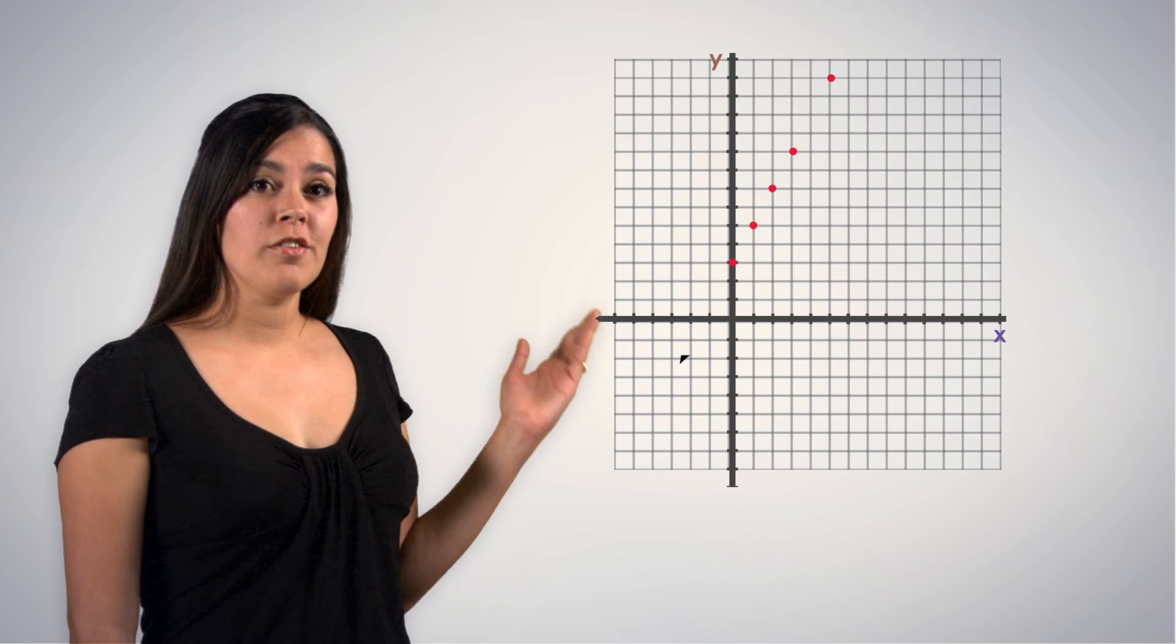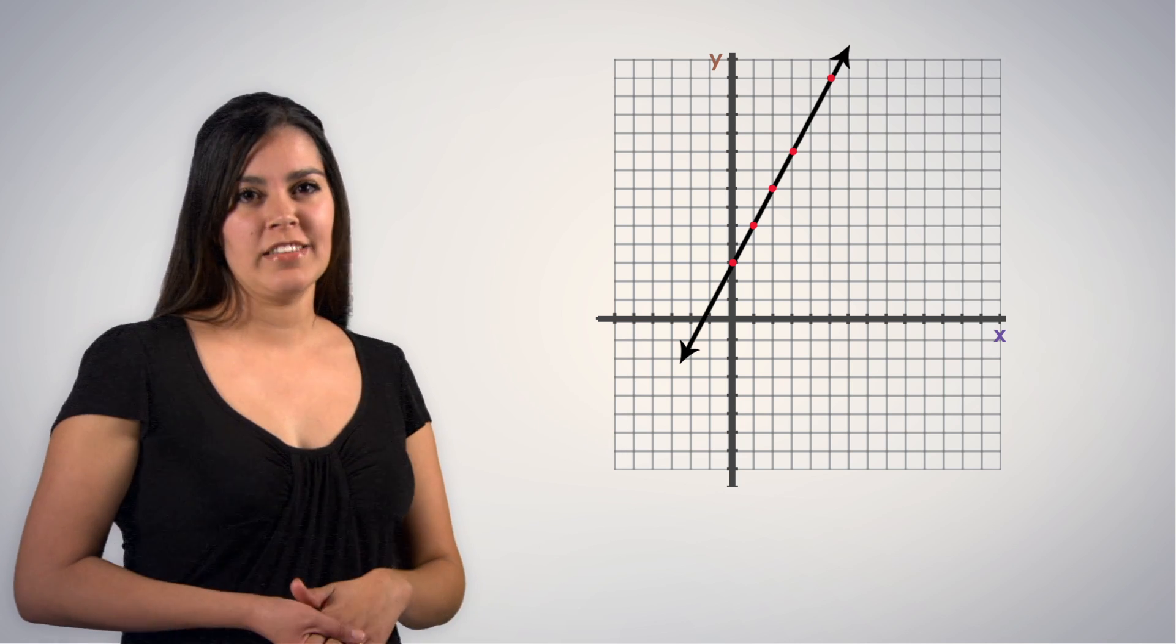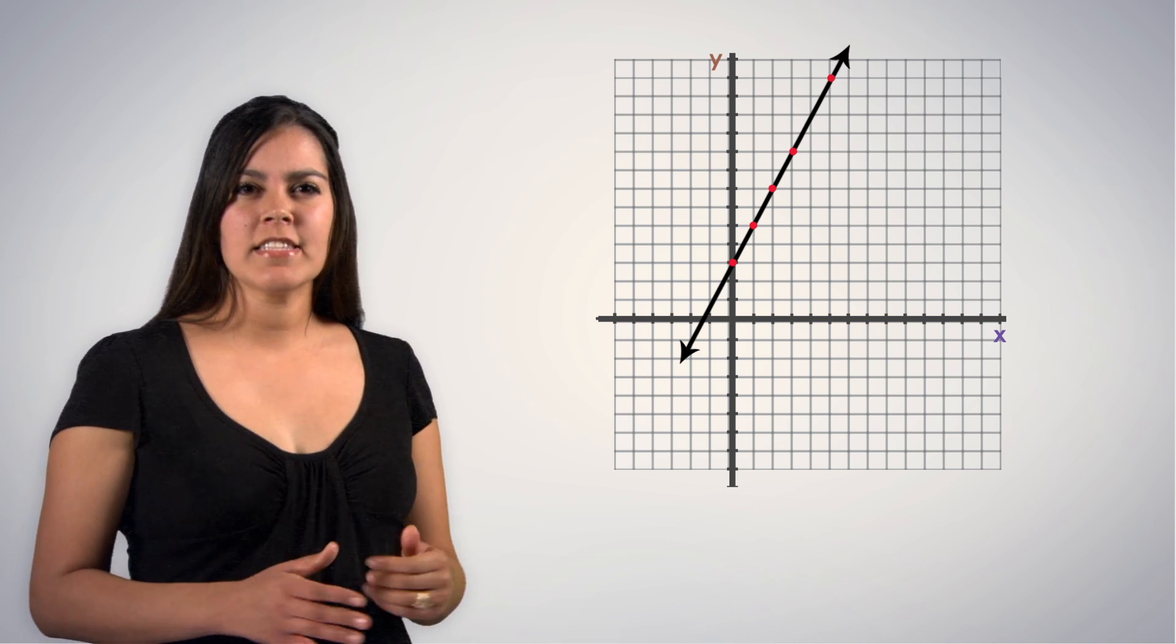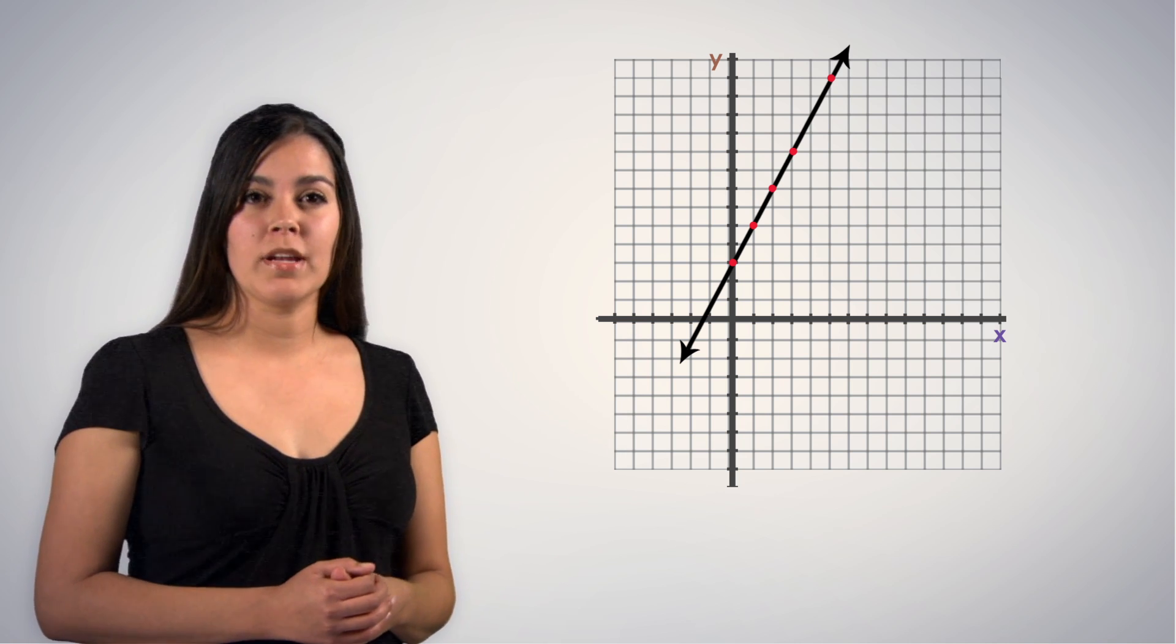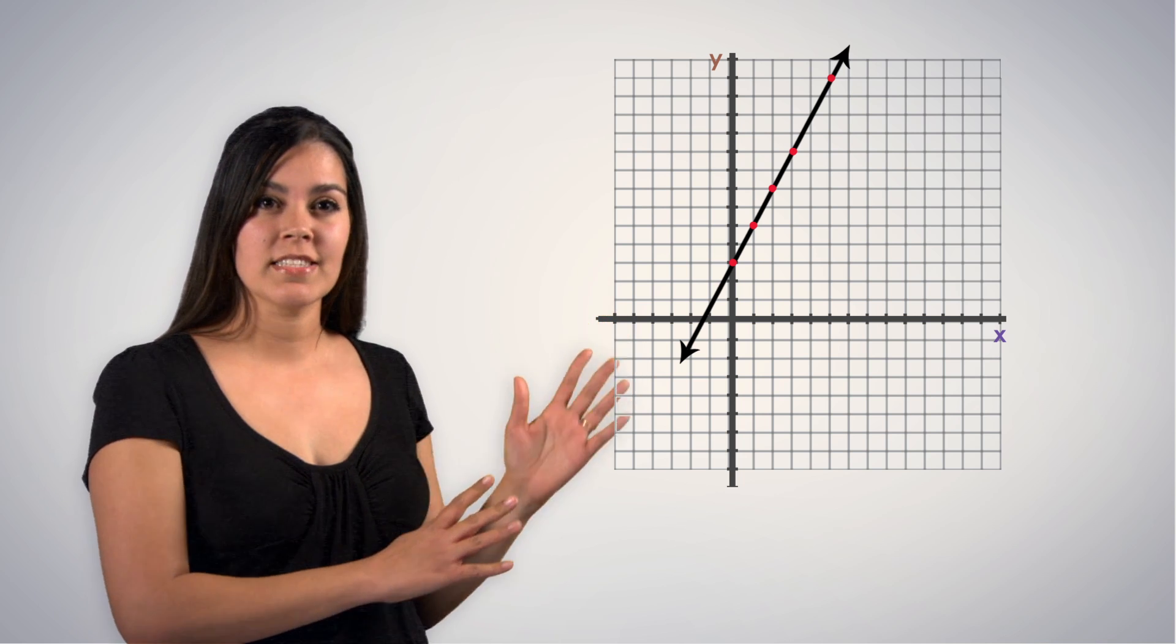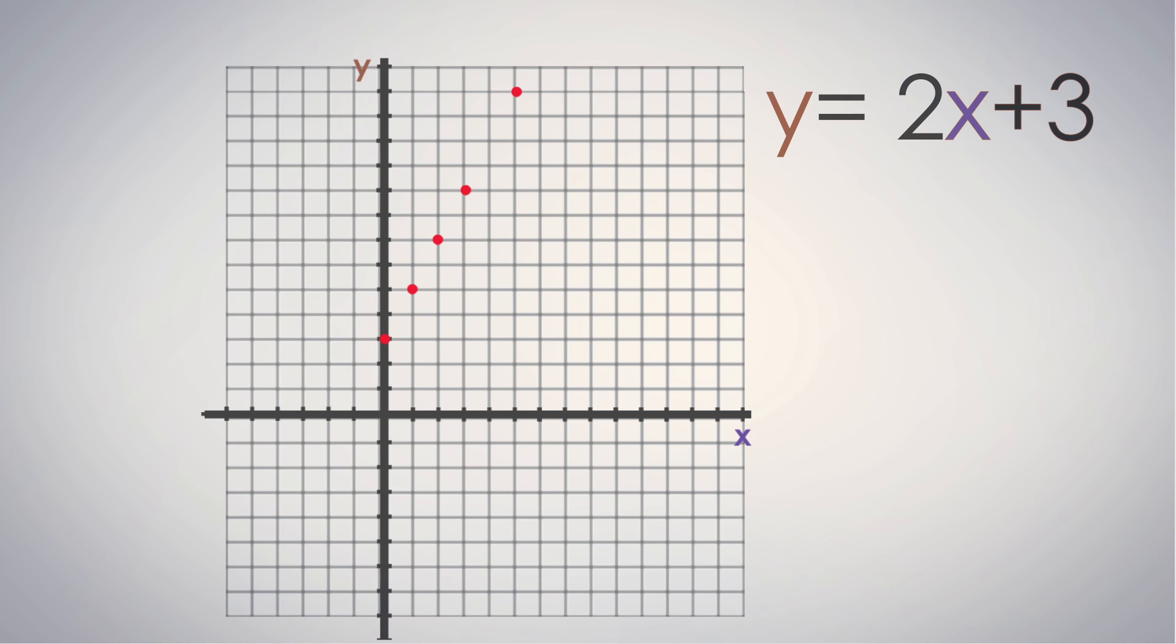It's important to notice that all straight lines on a graph represent linear functions. Now let's see if we can find a connection between where the line crosses the y-axis and information presented in the function. You may have noticed that the line crosses the y-axis at 0, 3, and that 3 is the initial number of fans on your MathSpace page.